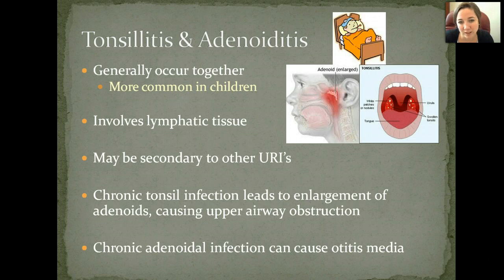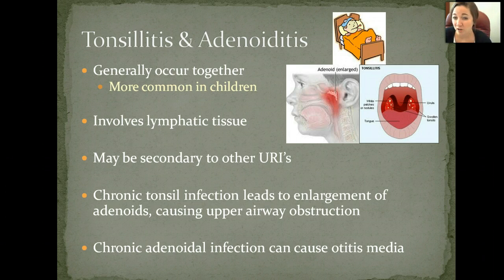It can be secondary to upper respiratory infections. It's a chronic tonsil infection that leads to enlargement typically of your adenoids as well, and it will eventually cause upper respiratory obstruction, meaning it's really tough to breathe.